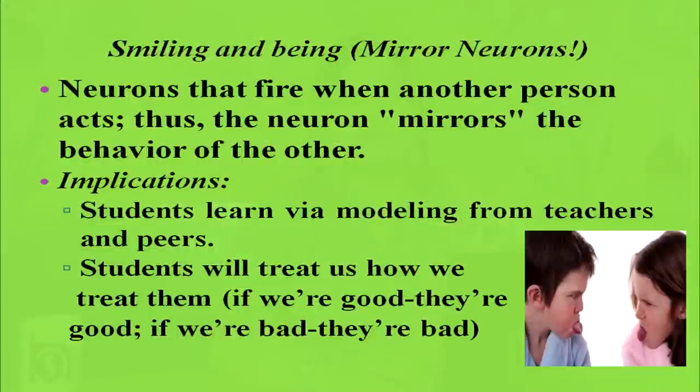Smiling and being positive relates to mirror neurons — neurons that fire when another person acts, thus mirroring the behavior of others. This can be implemented because students learn via modeling from teachers and peers. Students will treat us how we treat them. If we are good to them, they will be good to us; if we don't talk to them sweetly or softly, they will also behave badly towards us.